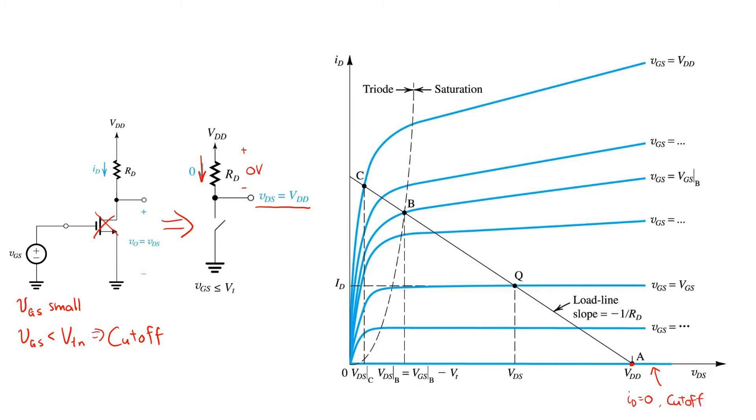Again, corresponding to any value of VGS less than the threshold voltage. And the point that that line intersects with the load line is obviously at point A, which graphically, we can see, gives us the output voltage VDD and drain current ID equal to zero that we expect.